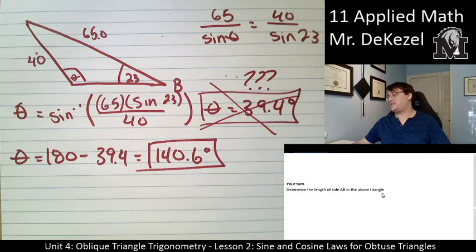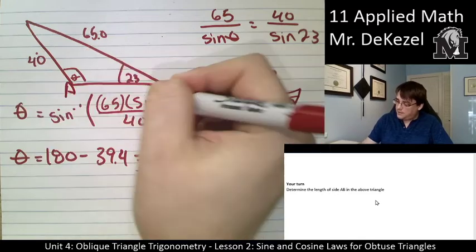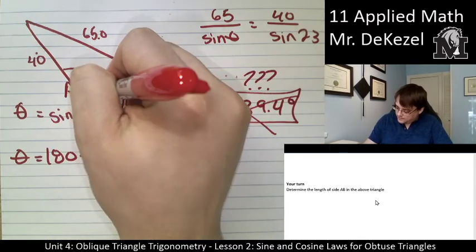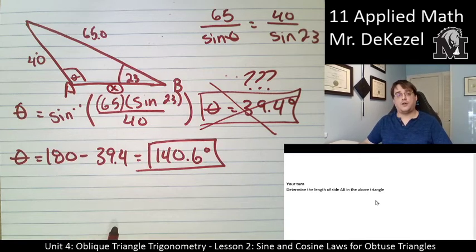So I'd like you guys now, your turn. So what you're going to do is you're going to determine the length of AB. That is this length here. So you're going to determine this length of this triangle. So pause it and give it a try. And when you're done, unpause it and we'll go over it together.